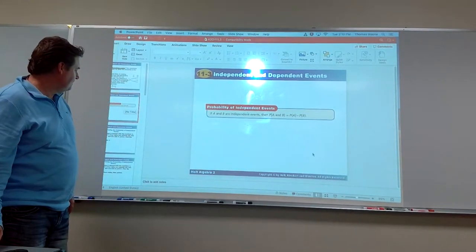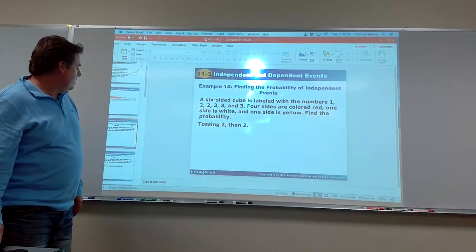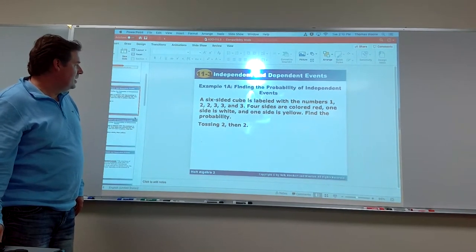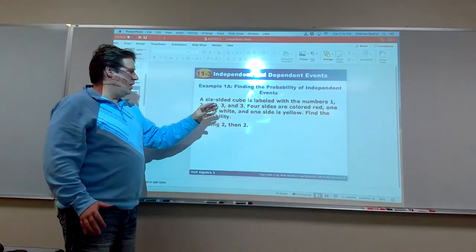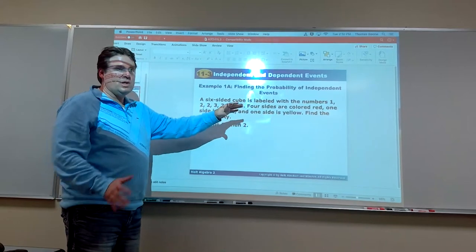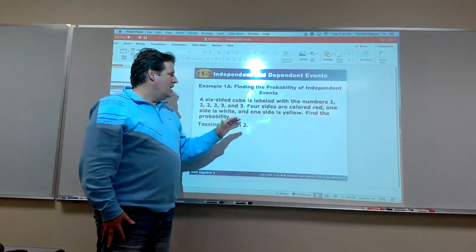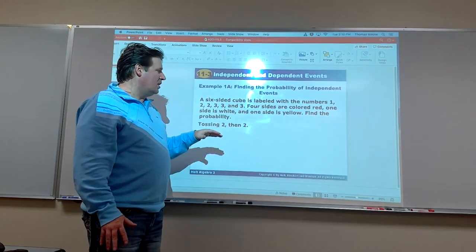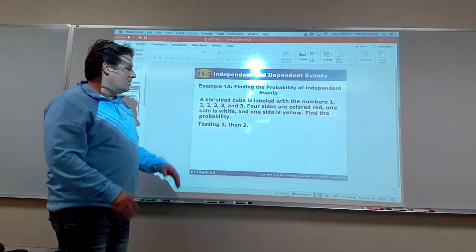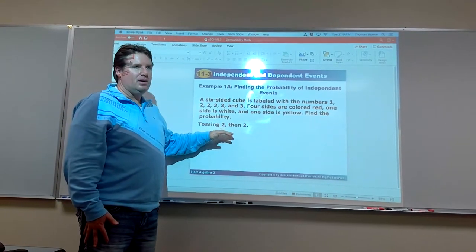Here are some examples. Alright, independent events. So, six-sided cube. Now, this is a non-regular die. This is one that has a 1, two 2s, and then three 3s. Those are the six sides. So it's a modified die. Now four of the sides are colored red, one is white, and one is yellow. That actually is extraneous information. We don't need that for this case. But what's the probability of tossing a 2 and then a 2 again?